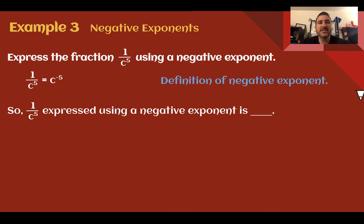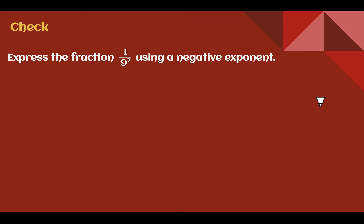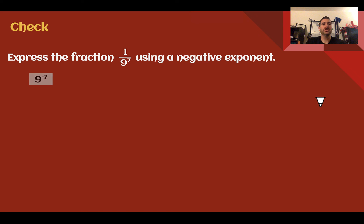Example 3 — negative exponents. Express the fraction 1 over c to the 5th using a negative exponent. Here we're going backwards from what we did before. If we see an exponent in the denominator of a fraction, it can be expressed as a negative exponent. Taking it out of the fraction, we make it a negative exponent. So 1 over c to the 5th using a negative exponent is c to the negative 5. Check your understanding: the answer is 9 to the negative 7. Take the base and exponent from the denominator, move it out, same base, negative exponent.